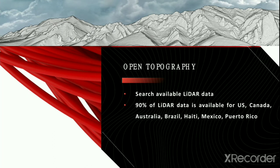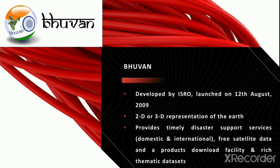Open Topography is another open web source available with LIDAR data. Approximately 90% of the LIDAR data, especially for countries like the United States, Canada, Australia, and Brazil, are available through Open Topography.